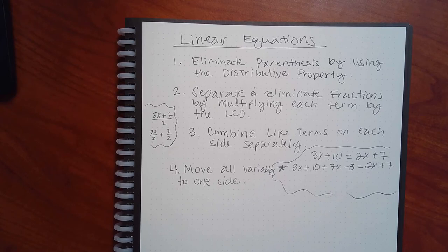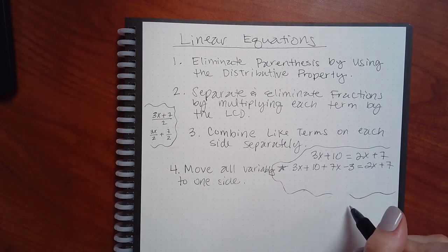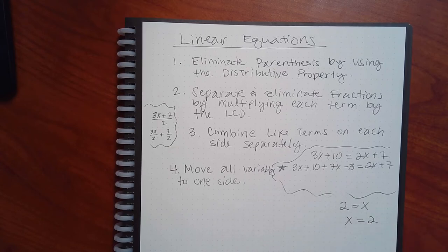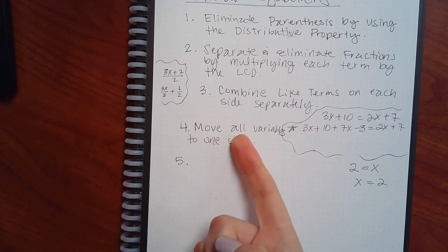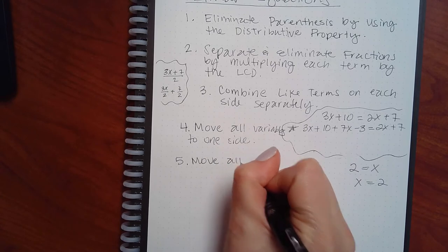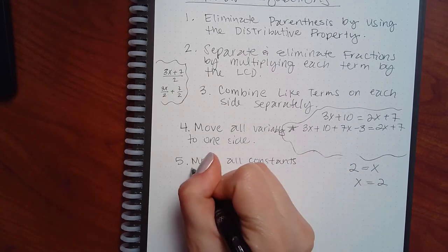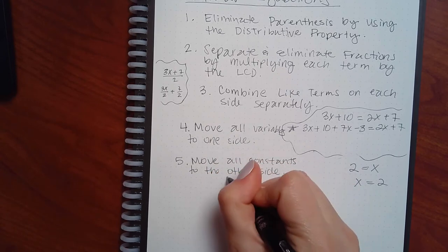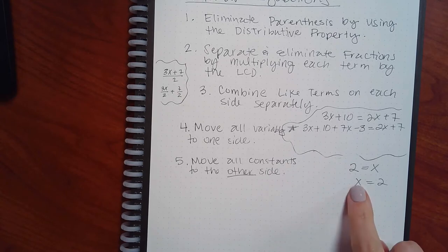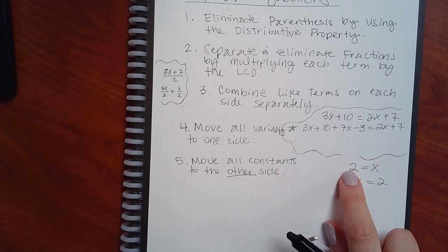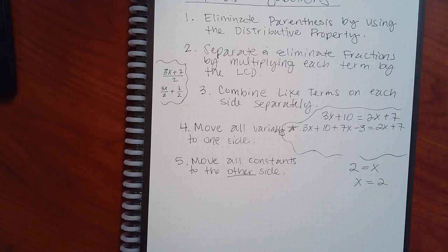It truly doesn't matter, especially when you only have one x already on one side — it would be an unnecessary extra step to move it. If I leave it on the right, the answer will just look backwards, like 2 = x instead of x = 2, but the answer is still 2. The important thing is: if you move all your variables to one side, you need to move all the constants to the other side.